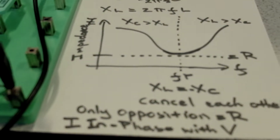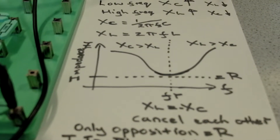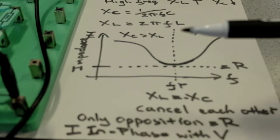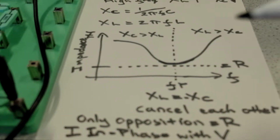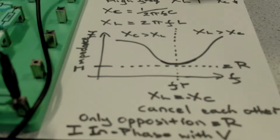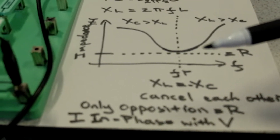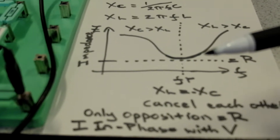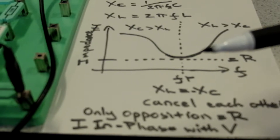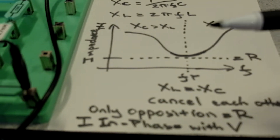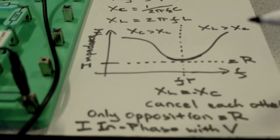The combination of XL being linear and XC being non-linear results in a bathtub effect for overall circuit impedance Z plotted against frequency. We get a particular frequency called the resonant frequency where the overall circuit impedance Z is minimized. At that particular frequency, the only opposition to current flow is from the resistor. The value of resistance doesn't matter for resonance — it does matter for the Q factor and bandwidth — but only XL and XC values define the resonant frequency.